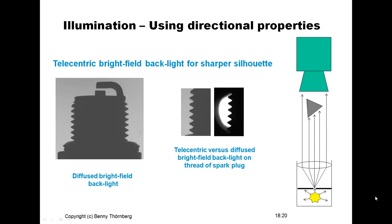We should try to use a telecentric lens that generates parallel light rays. Here is a principal sketch of a camera and its lens with the object, and the illumination source equipped with a telecentric lens having a small aperture — on the output of the lens, almost parallel light rays are emitted. This is the same picture as on the previous slide using diffused bright field backlight, and on the right side a corresponding silhouette image generated using telecentric illumination. You can see that this silhouette image is much sharper — the edges are much sharper compared to the diffused bright field backlight.